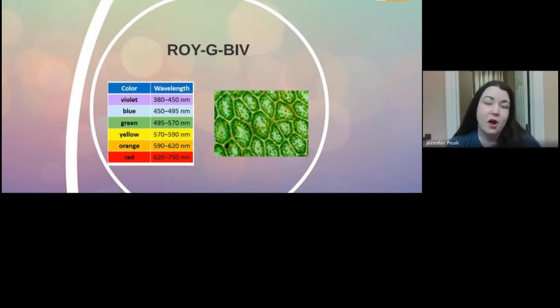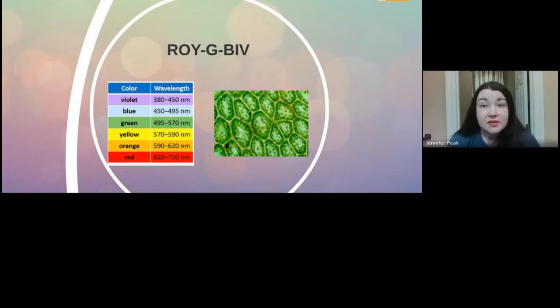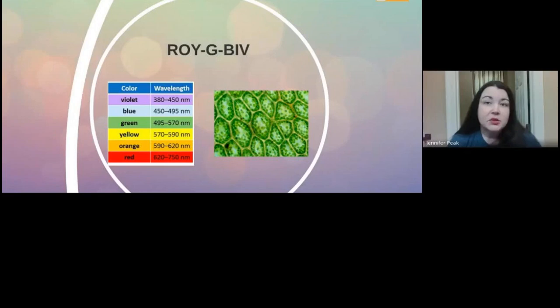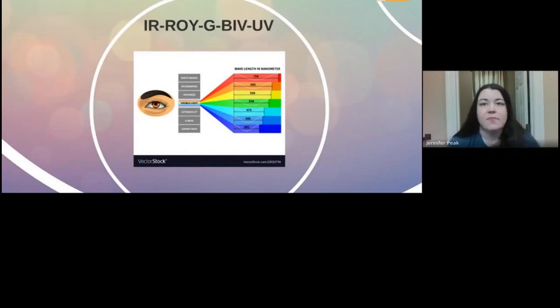For humans, the visible light spectrum is known as ROYGBIV — red, orange, yellow, green, blue, indigo, and violet. You've probably talked about this before in freshman biology when discussing photosynthesis. Chloroplasts appear green because they reflect those wavelengths of light. There are also things outside this visible spectrum — waves of light we cannot detect — such as radio waves, microwaves, and X-rays.